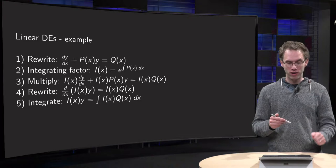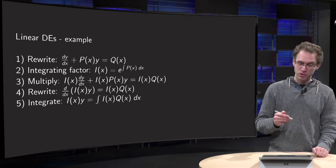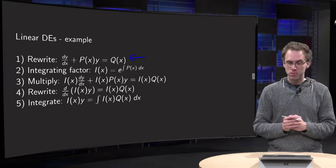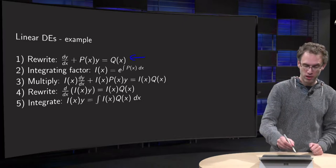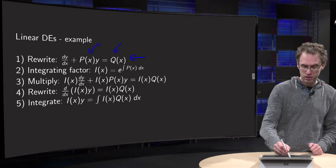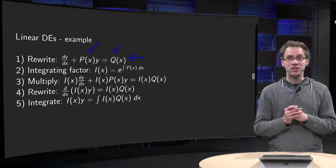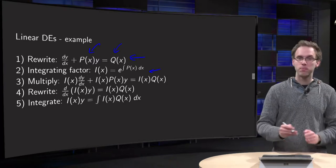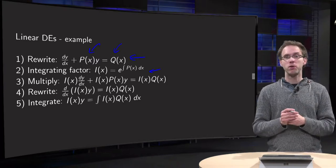So what are our 5 steps? First of all you have to rewrite your differential equation in the standard form, dy/dx plus p of x times y equals q, so you have to identify p and q. Second step, you compute the integrating factor. You integrate p with respect to x and put it in an exponent.